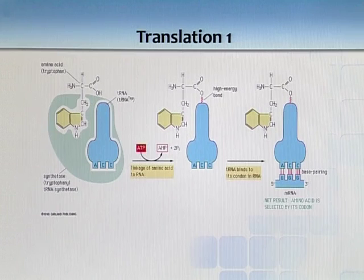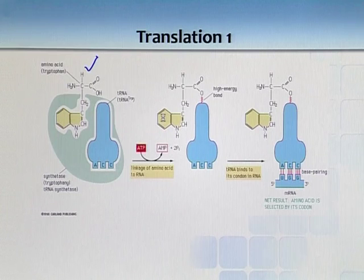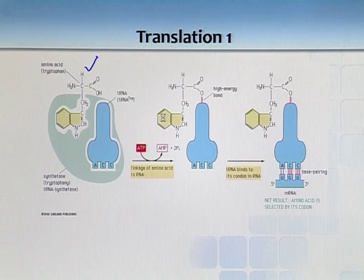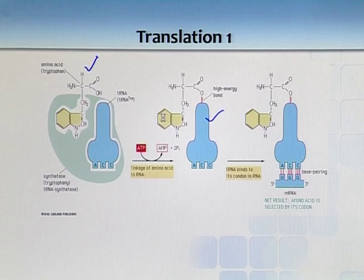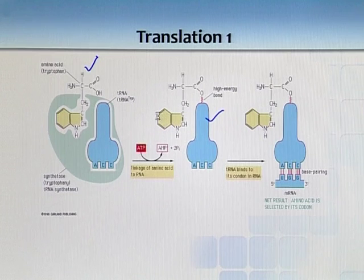What does aminoacyl-tRNA synthetase do? Consider the amino acid tryptophan — it has to bind to a transfer RNA. It only binds to the transfer RNA with the help of ATP, and it is linked to a transfer RNA which has an anticodon of ACC. That anticodon will ultimately bind to the messenger RNA codon UGG, and in this way amino acids are brought together and a polypeptide chain is formed.